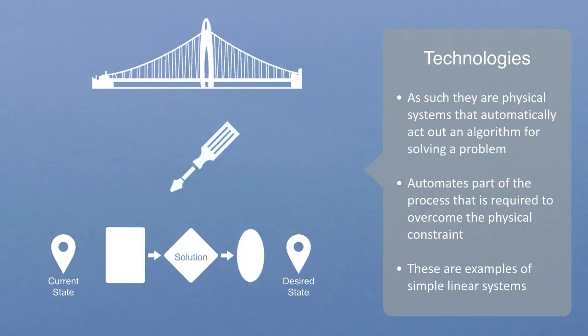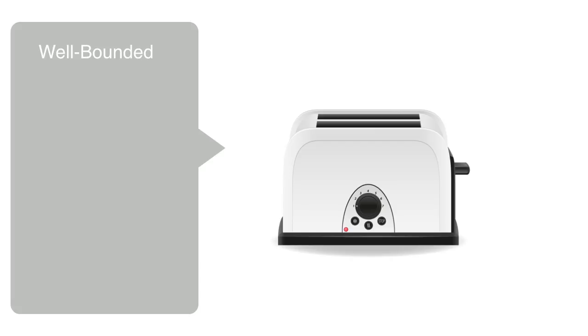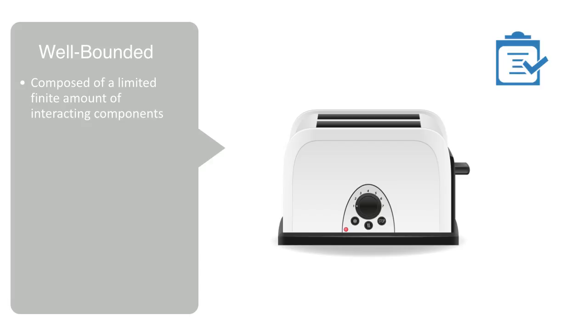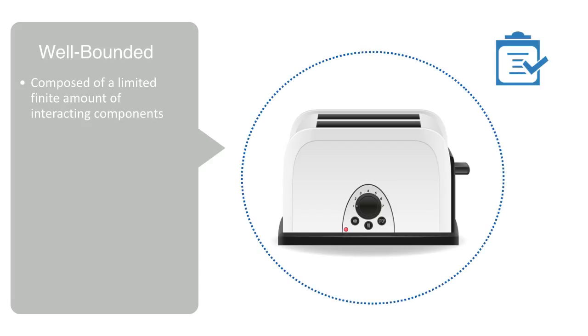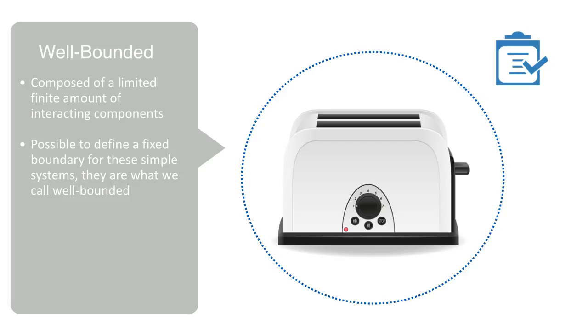To illustrate some of the characteristics of linear technologies, we'll take a common household toaster as an example. Firstly, linear systems are composed of a finite amount of interacting components. Our toaster may have a maximum of a few hundred components. Thus it is possible to itemize and describe each component in the system. Because of this, it is often possible to define a fixed boundary for these simple systems.